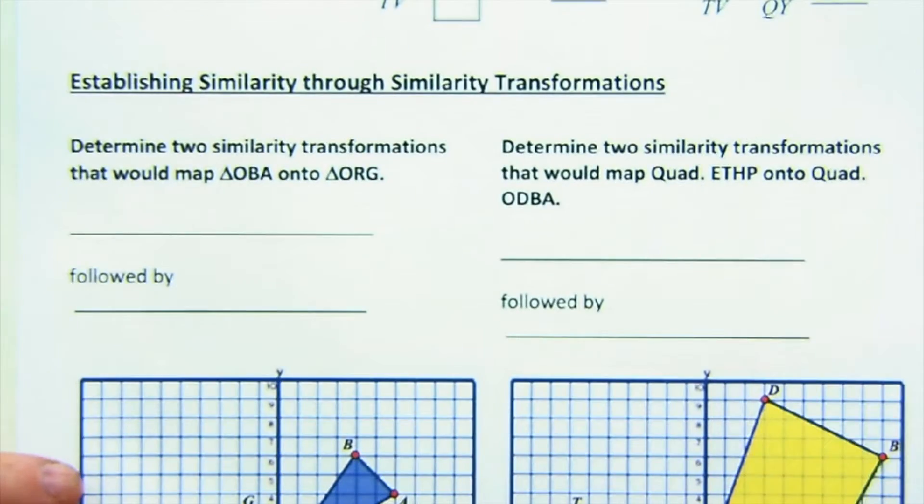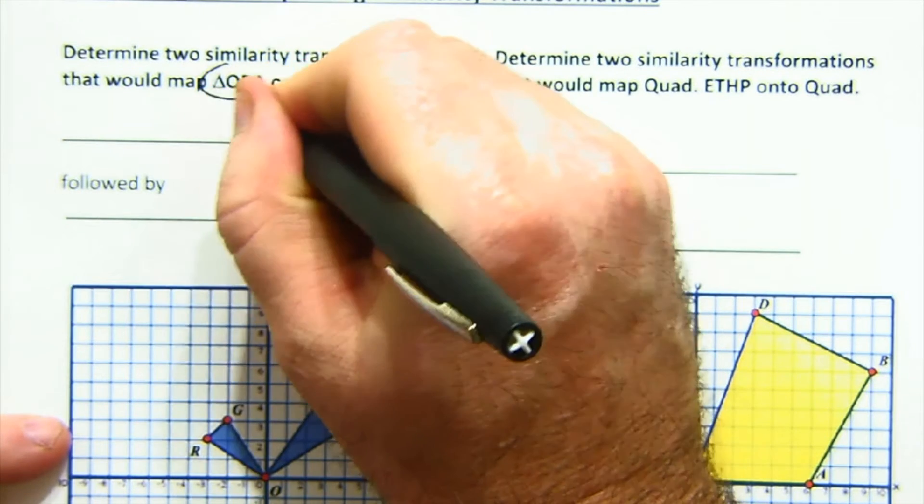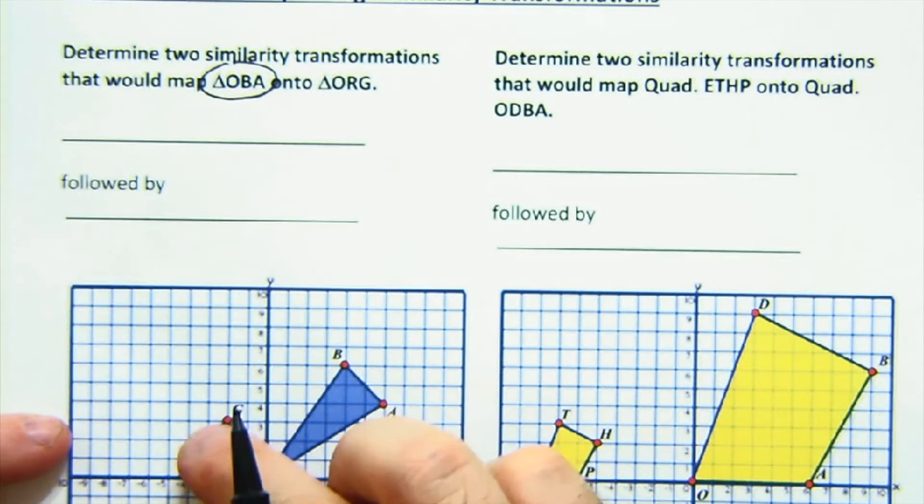Down here, we're now learning that the way we establish things to be similar is to map one onto the other using similarity transformations, which are the rotation, reflection, translation, and now the dilation. And so if we're going to map OBA, this big guy, onto this one, you've got some options.